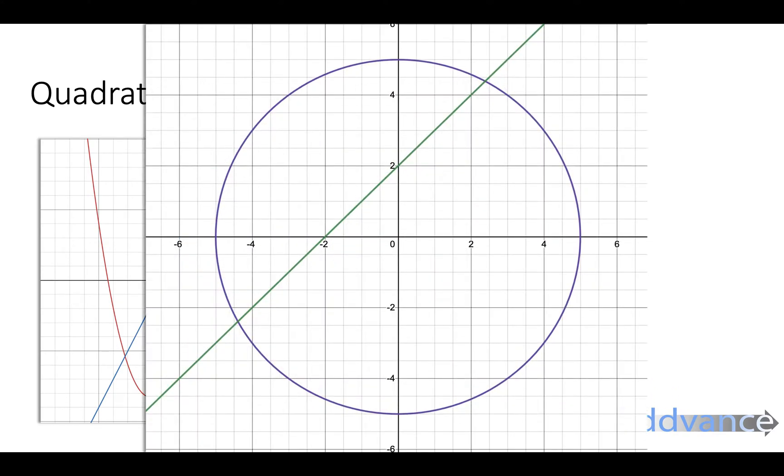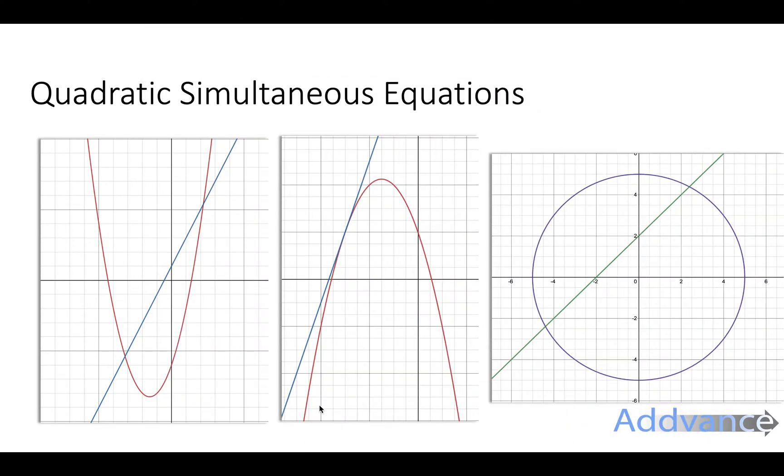I've got three examples on the screen for you. I've got a red curve and a blue line and they cross at two different points. I have a red curve and a blue line crossing at one point, and I have a circular graph, which is just pretty much a quadratic anyway, crossing the green line at two points as well.